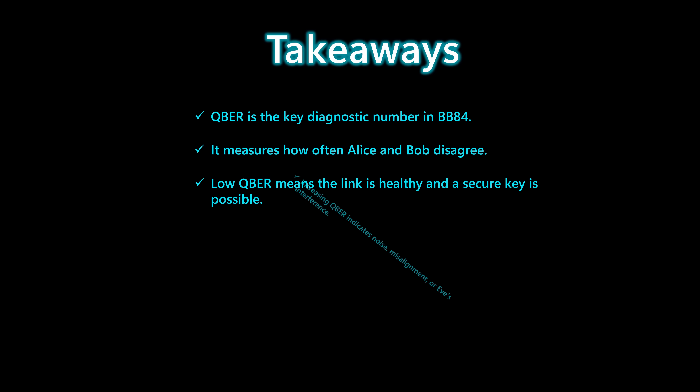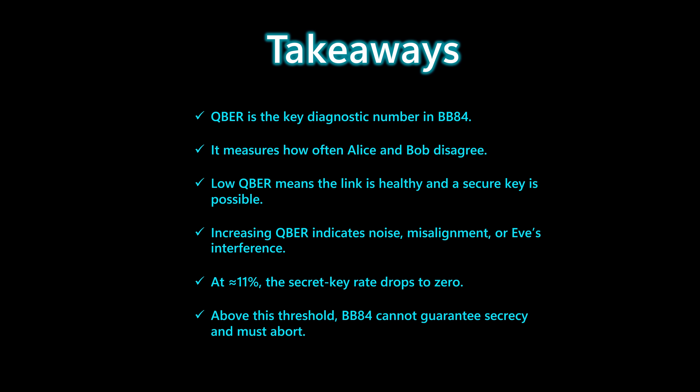QBER is the key diagnostic number in BB84. It tells Alice and Bob how often they disagree, and how healthy their quantum link really is. A low QBER means the channel is stable and a secure key is possible. As the error rate rises, it signals noise, misalignment, or even interference from Eve. Around 11 percent, the secret key rate drops to zero, and above that point no amount of post-processing can restore secrecy — BB84 has to abort. Understanding QBER, what it means and how it behaves, is essential to understanding when BB84 works and when it doesn't.